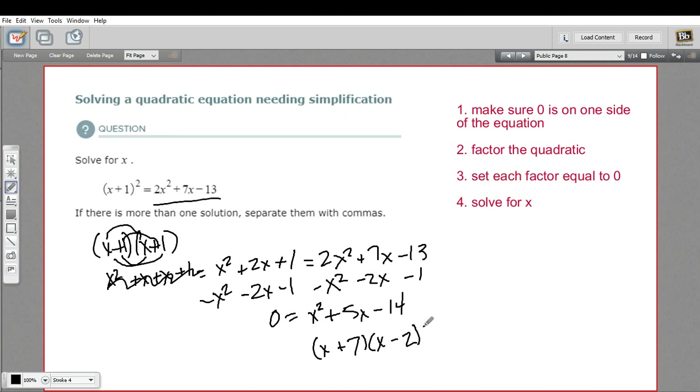So we'll set each of those equal to 0. So x plus 7 equals 0. And x minus 2 equals 0. And we'll solve each of these for x. This one I can solve for x by subtracting 7 from each side. And I get x equals negative 7. And here, I would need to add 2 to each side. And I get x equals 2. When we enter our answer, we want to separate these with commas. So x is going to be negative 7 comma 2.